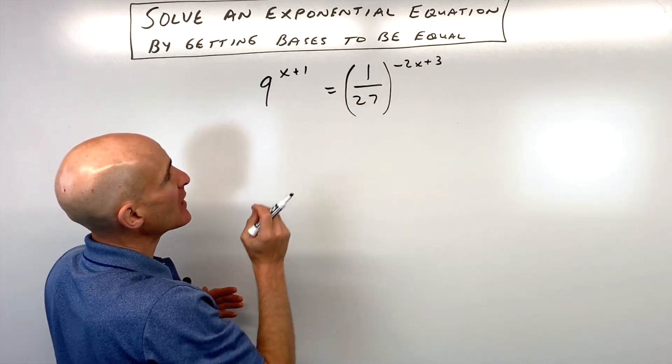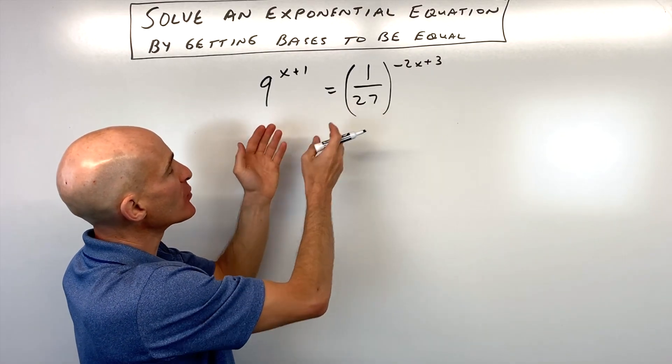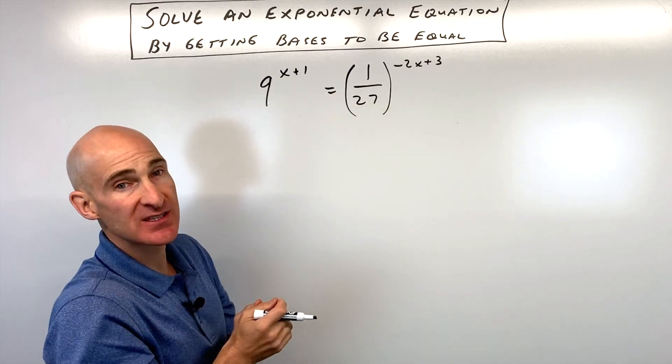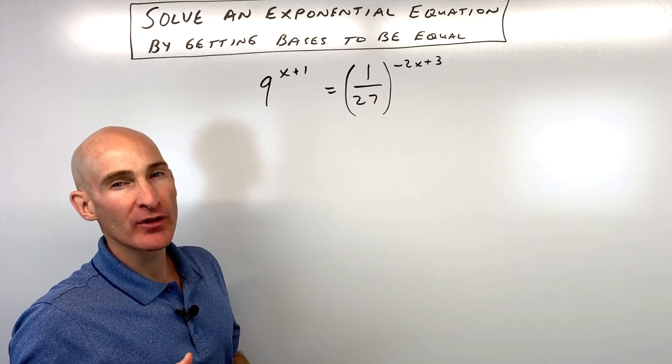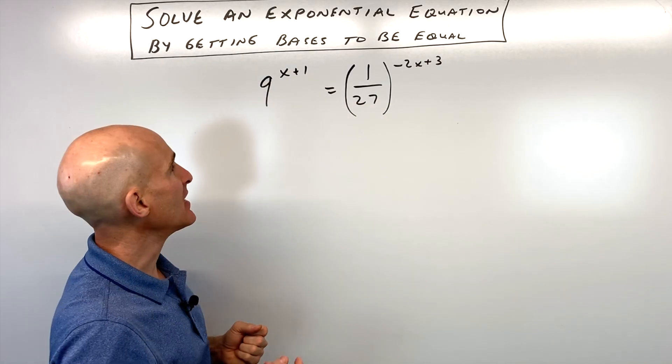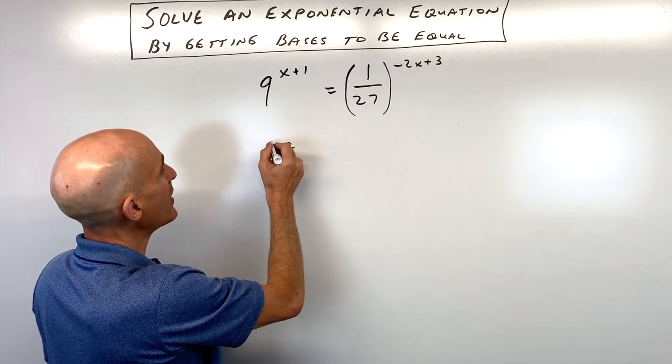When we look at 9 and we look at 1/27, is there a number that we can write both of those bases in terms of? Well, 9 and 27, I notice they both have 3 as a common base. So what I can do is say 9 is really like 3 squared.